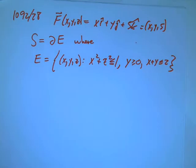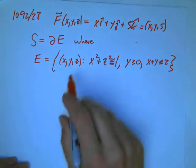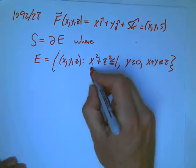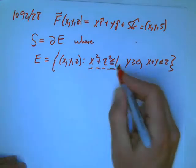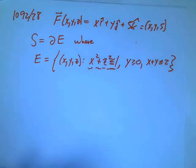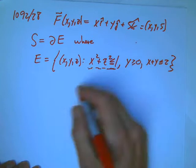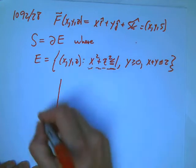And s is the boundary of a certain three-dimensional region, a certain blob, and it's everything that's e, the actual region, is the inside of the cylinder x squared plus z squared is less than or equal to 1. So let's draw that.